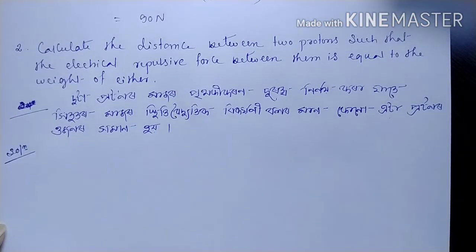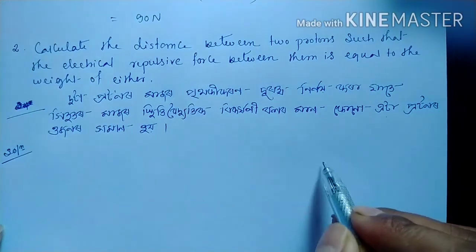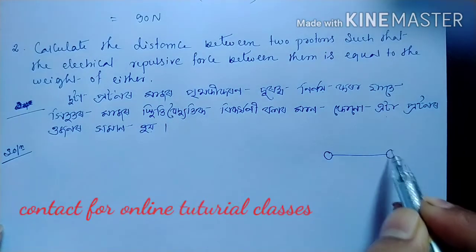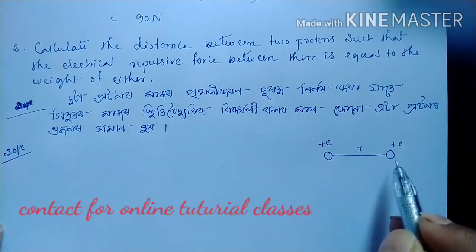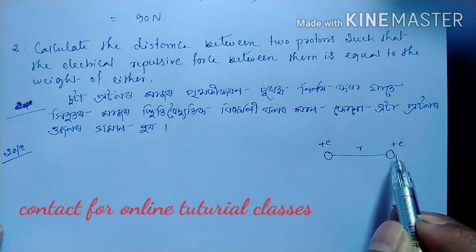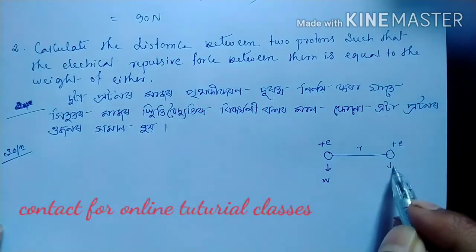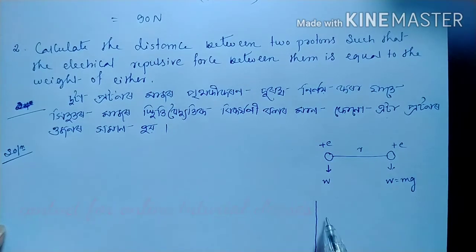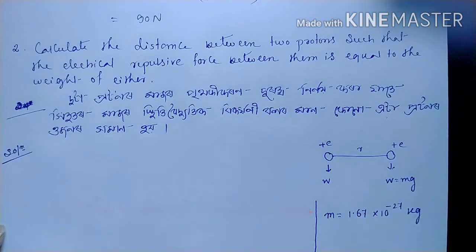Next question. We have to determine the distance between two protons such that their electrostatic force of repulsion equals their gravitational weight. For that, you should know the mass of a proton: M = 1.67 × 10⁻²⁷ kg.